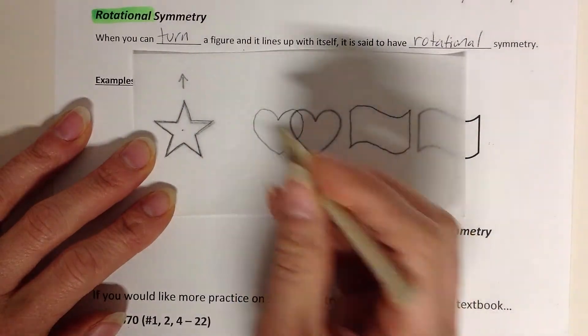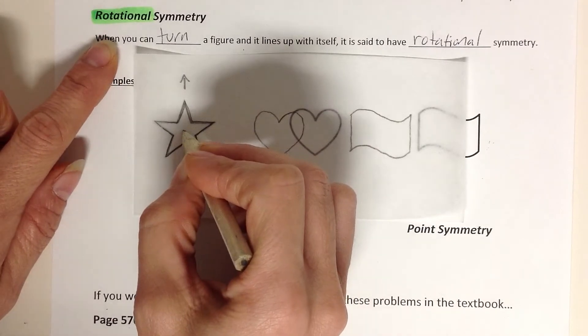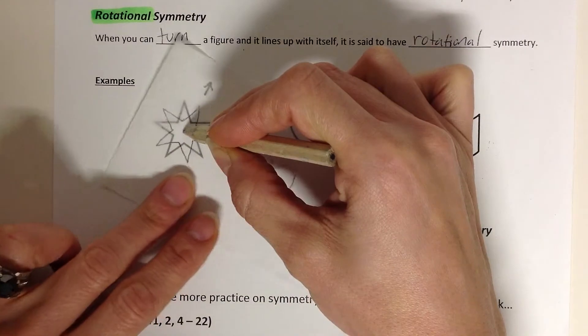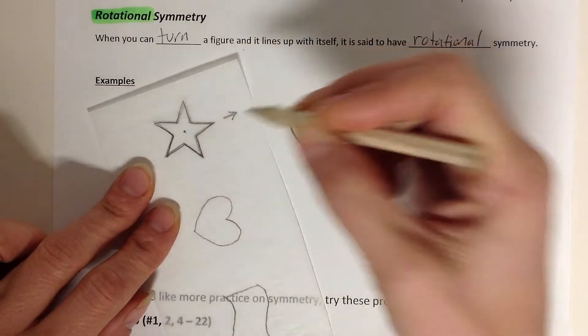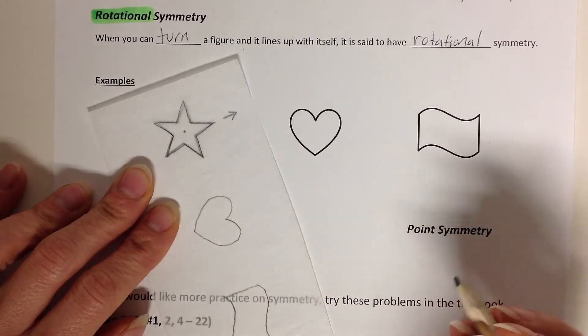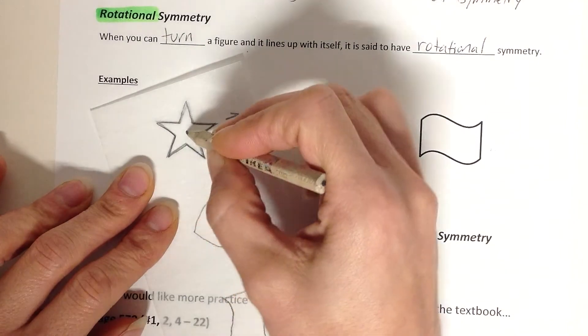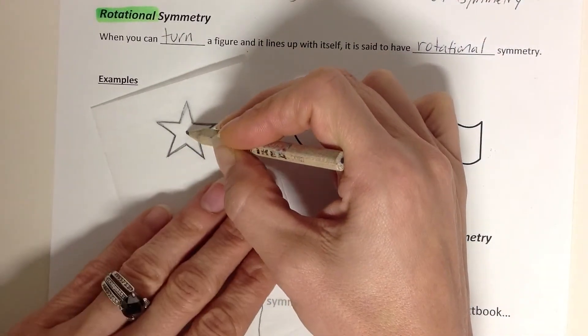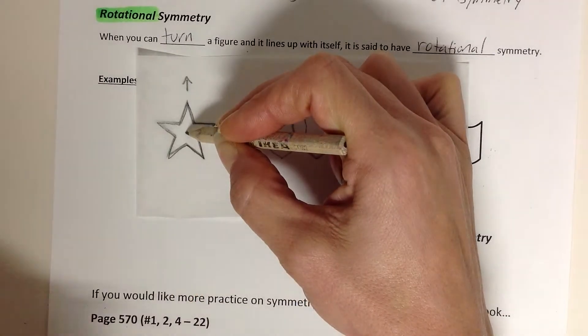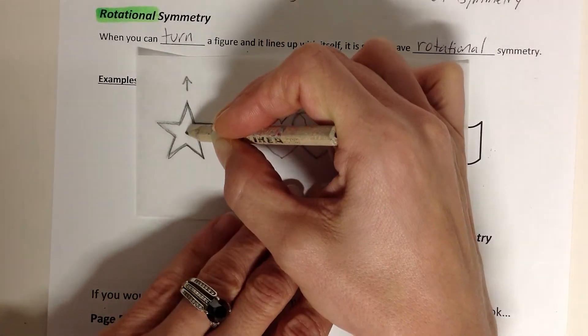And then I start turning it. I hold it on a point. Again, when I turn, I'm turning it about a point. So here I go. I count how many times it's going to land on itself. If I've landed on the picture and I haven't gone a full rotation, then the answer is going to be yes. This is going to have rotational symmetry. Sometimes you're asked about a degree of rotation. So let's see, let's start back over.